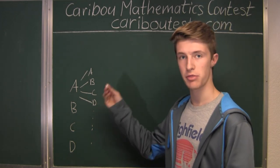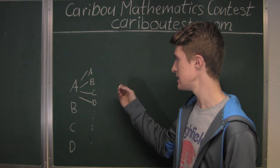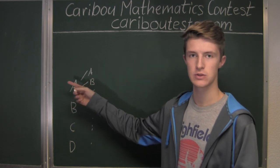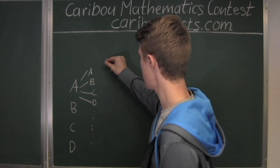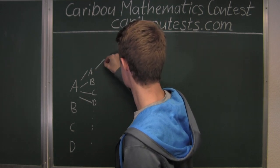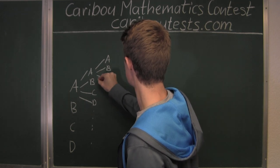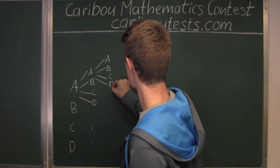Now again for the third letter, we have four options: A, B, C, and D, for every combination of two for the first two letters. So for A, again it's A, B, C, and D.